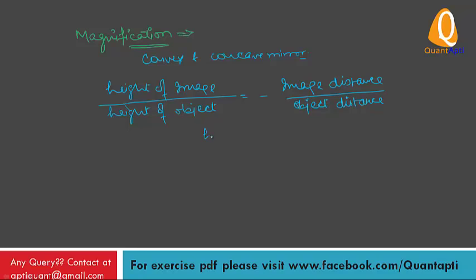What is the height of image? It is known as H prime upon height of object H minus image distance that is V upon object distance that is U.